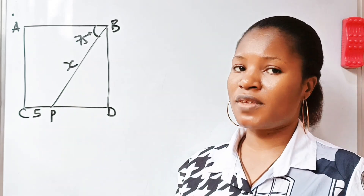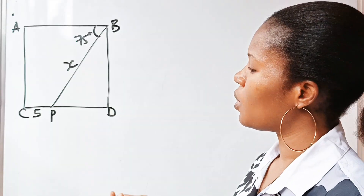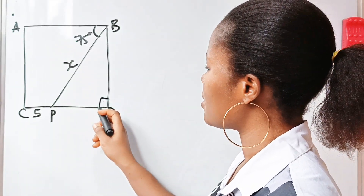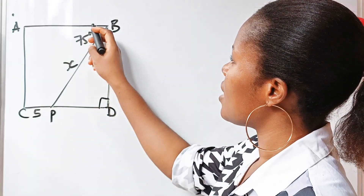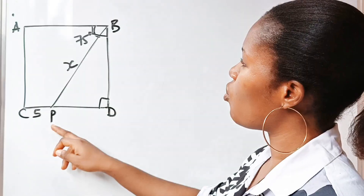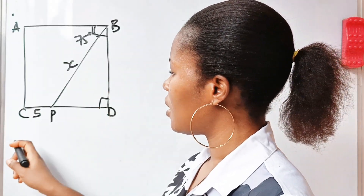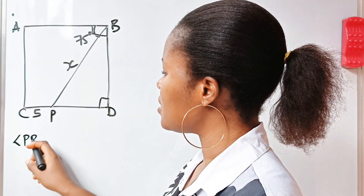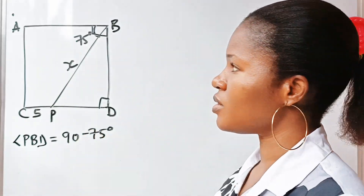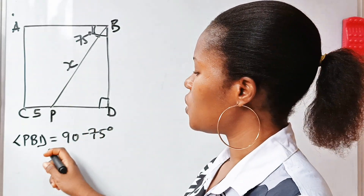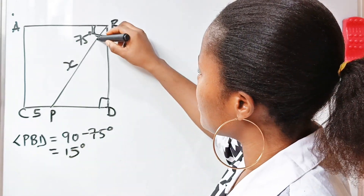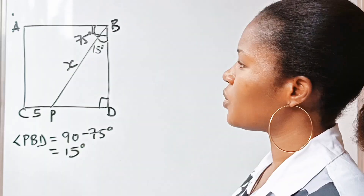We will read the mind of the examiner, as I used to say. First of all, this is a square, so it means that angle B is 90 degrees. To get angle PBD, it will be equal to 90 minus 75 degrees, which is equal to 15 degrees. So it means that this angle is 15 degrees.